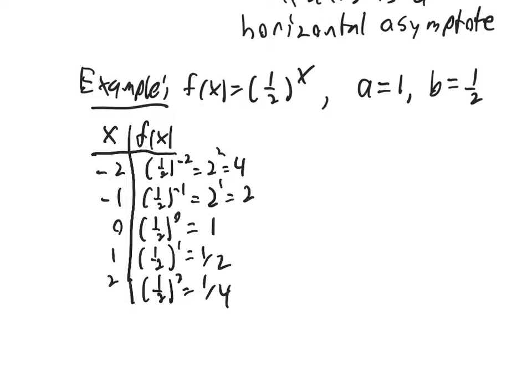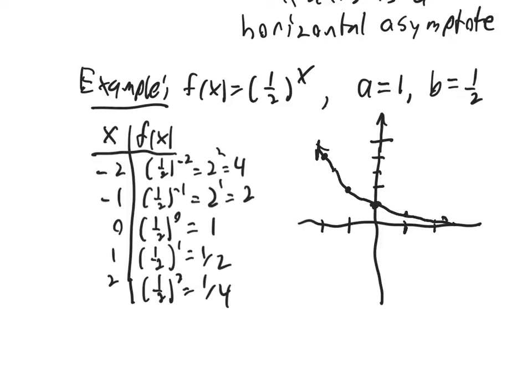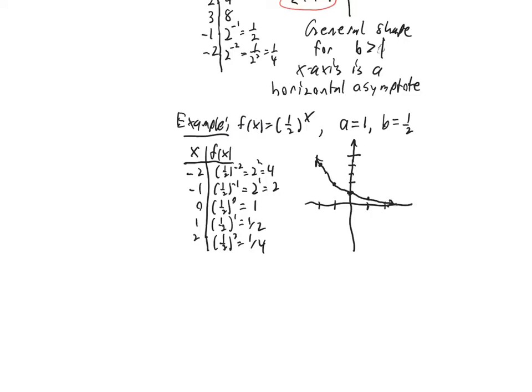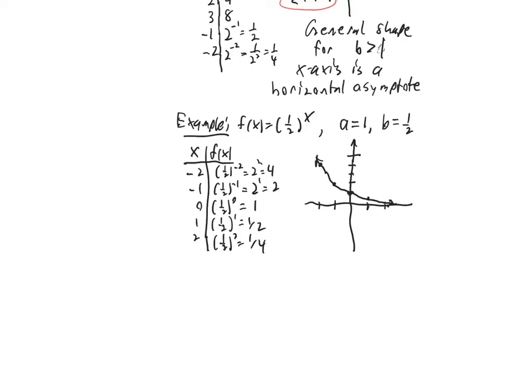Now notice these are the same values as the last graph but just kind of flipped around so that we're getting the larger values for negative x's. So negative 2, 4, negative 1, 2, 0, 1, 1, 1 half, 2, 1 fourth. This graph looks something like this. And so you can kind of see it's the same shape only sort of flipped around right to left compared to the previous one.